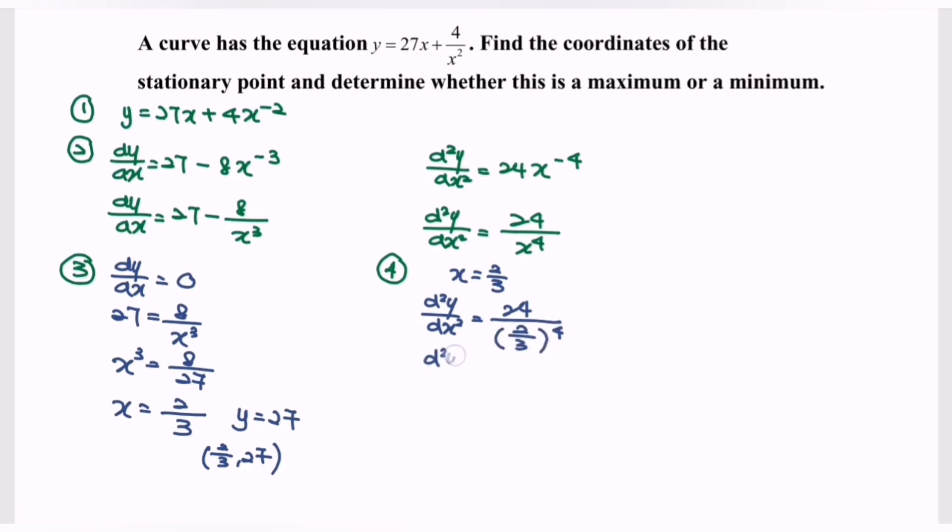So for the value of second derivative, we will have 24 over 2 to the power of 4, we will have 16 over 3 to the power of 4 which is 81. So finally, the value for the second derivative will be greater than 0.